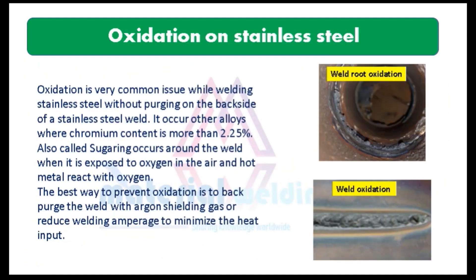Number 7 is oxidation on stainless steel. Oxidation is a very common issue while welding stainless steel without purging on the backside of the weld. It occurs in alloys where chromium content is more than 2.25%. Also called sugaring, it occurs around the weld when it is exposed to oxygen in the air and the hot metal reacts with oxygen. The best way to prevent oxidation is to back-purge the weld with argon shielding gas or reduce welding amperage to minimize heat input.